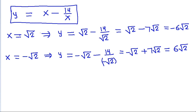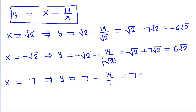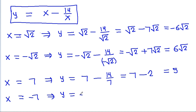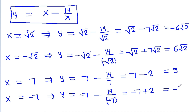If x equals 7, then y equals 7 minus 14 divided by 7, which is 7 minus 2, that is 5. And if x equals minus 7, then y equals minus 7 minus 14 divided by minus 7, which is minus 7 plus 2, so y equals minus 5.